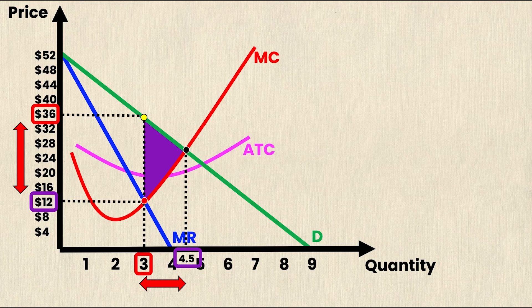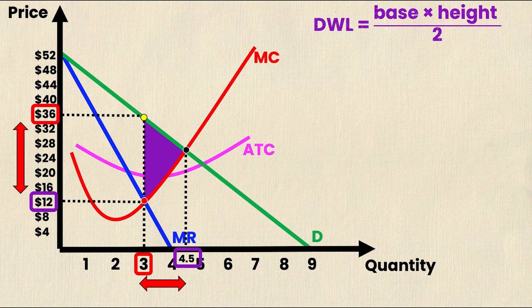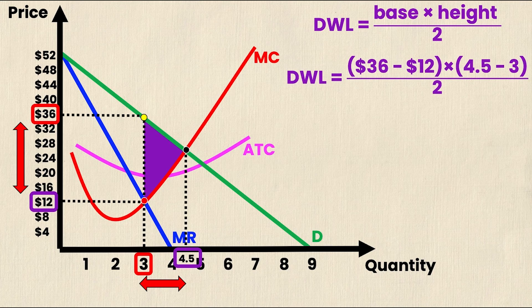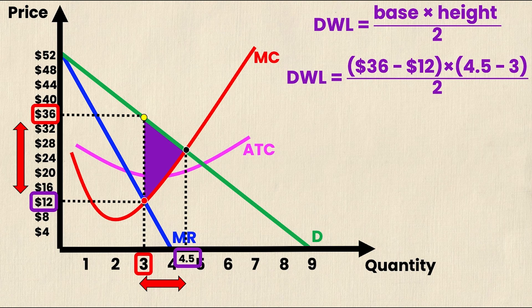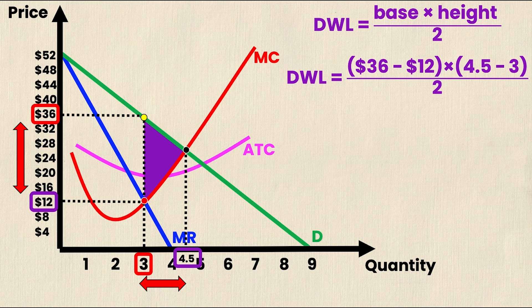So let's start with our general formula for the area of a triangle. Deadweight loss is equal to base times height divided by 2. Subbing in our known values, deadweight loss is equal to $36 minus $12, which is the base, times 4.5 minus 3, which is the height, divided by 2.